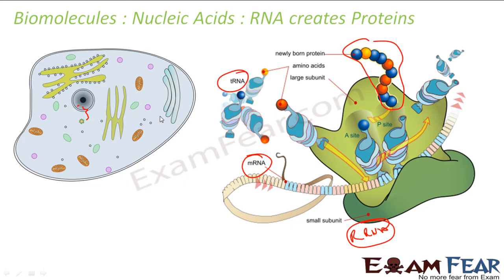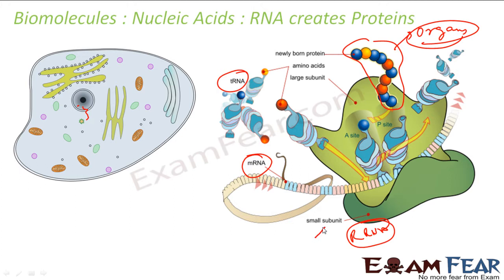The ribosome takes RNA as input. RNA has a sequence, and that sequence decides which protein has to be created. Everybody has a different sequence, so different kinds of proteins are created in the body, giving you different structure — because proteins create organs: eyes, nose, heart — everything is made by protein. The sequence in the RNA decides the kind of protein it will create.